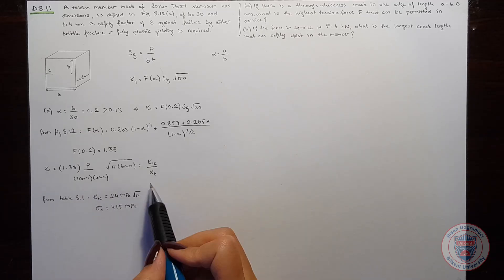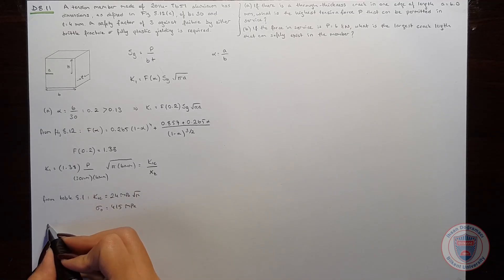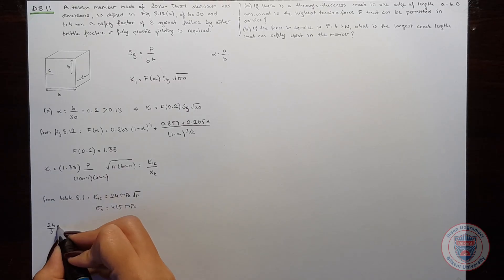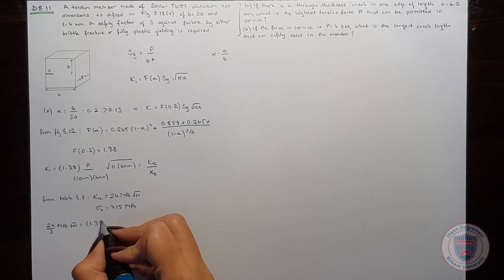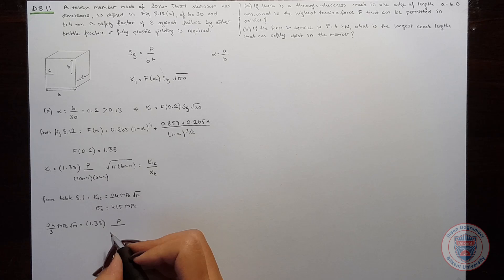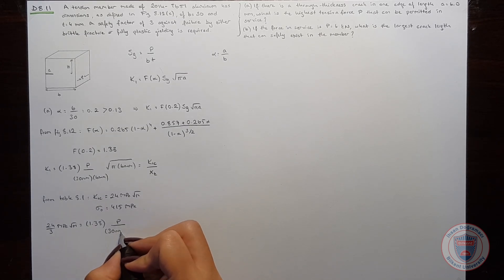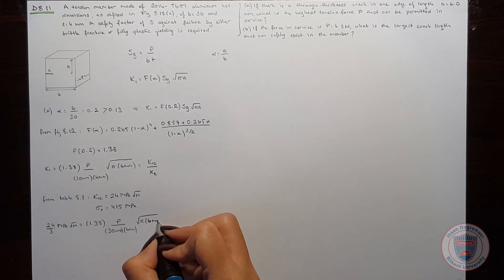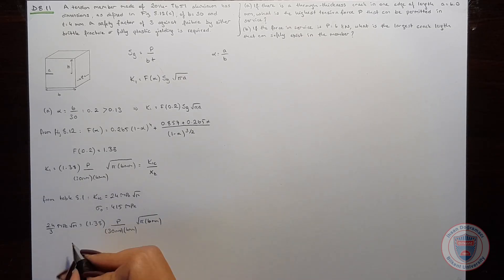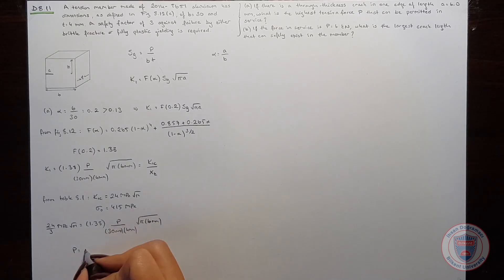Since the safety factor is 3, we can say that 24 over 3 MPa square root of meters will be equal to 1.38 times the force over 30 mm times 4 mm times square root of pi times 6 mm. And we will obtain the force is equal to 5.07 kN.